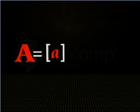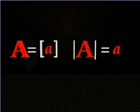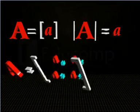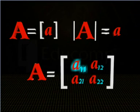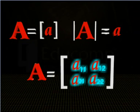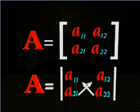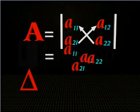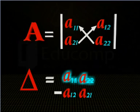Suppose A is a square matrix of order 1 containing element A, then determinant of A is defined to be equal to A. And if A is a square matrix of order 2 containing elements A11, A12, A21, and A22, then the determinant of matrix A is given by delta is equal to A11 into A22 minus A12 into A21.